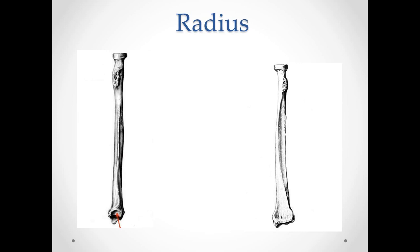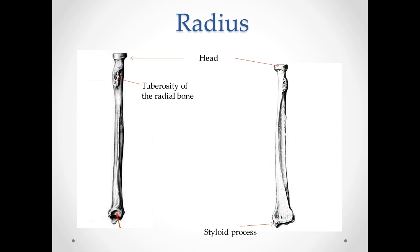Radius. In the forearm it is located laterally, on the side of the thumb. It consists of a body, or diaphysis, and two epiphyses. On the proximal epiphysis there is the head of the radial bone, caput radii. On the distal epiphysis there is the styloid process, processus styloideus. The tuberosity of the radial bone is located on the front surface, under the collum radii. The biceps muscle of the shoulder is attached to it. There is also an articular surface on the distal epiphysis.